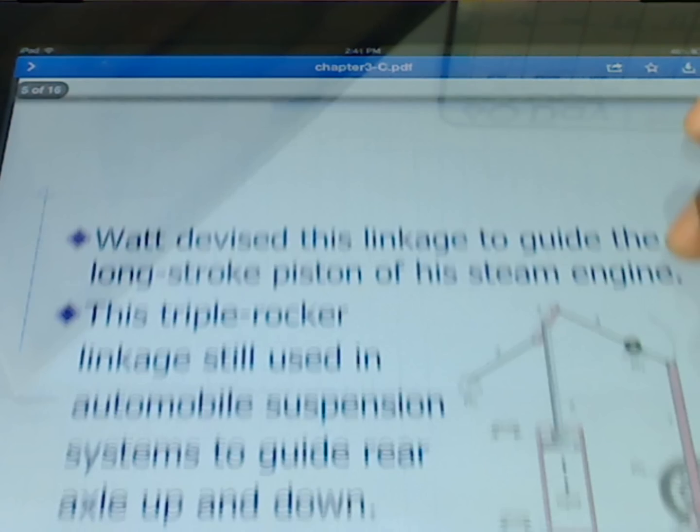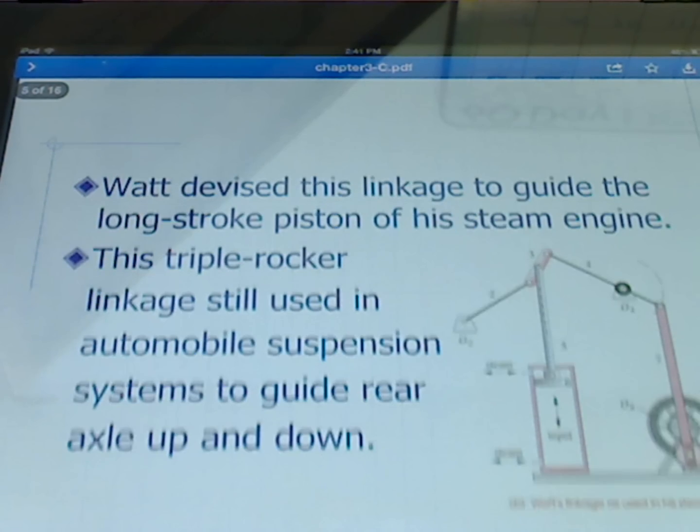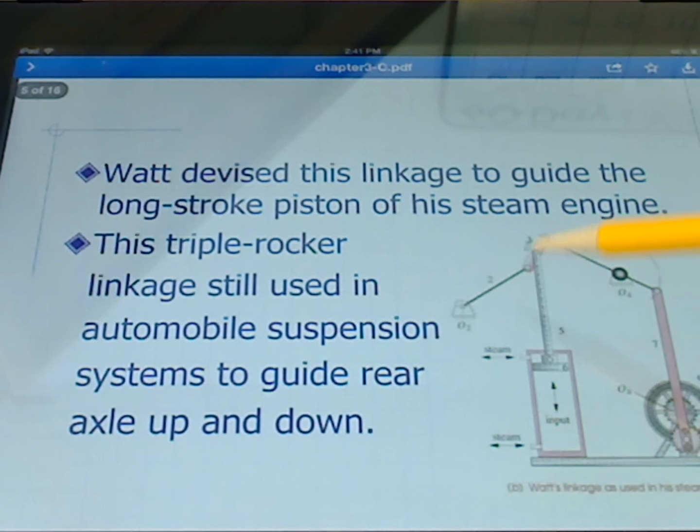Watt developed this linkage to guide the long stroke piston of a steam engine. Here you can see that point P is connected to a piston which is going to move up and down in this particular setup. This triple rocker linkage is still used in automobile suspension systems to guide the rear axle up and down.